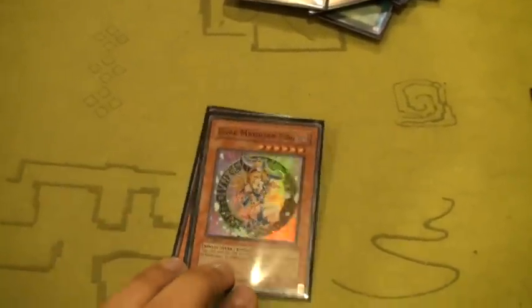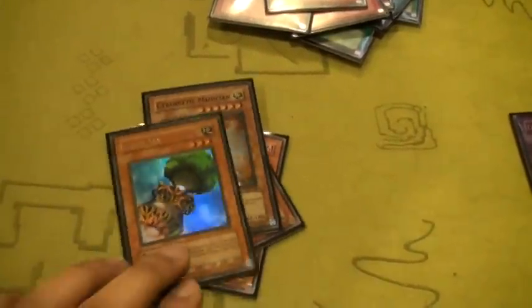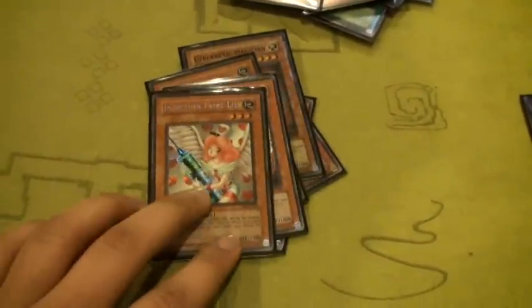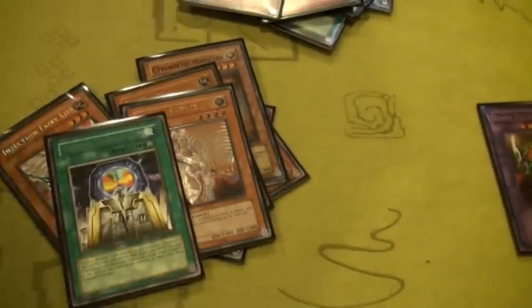I had a Jester Lord, another Dark Magician Girl, Cybernetic Magician, Fiber Jar, Sage of Silence, Injection Fairy Lily, what's this one called again, Different Dimension Gate.